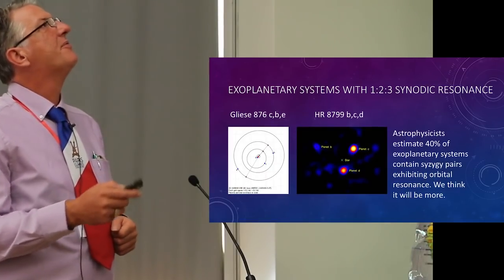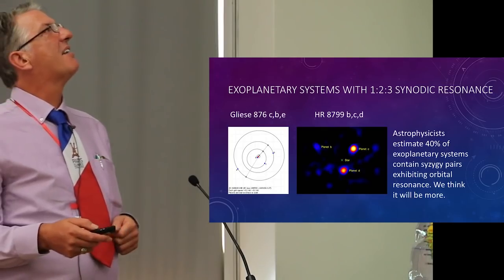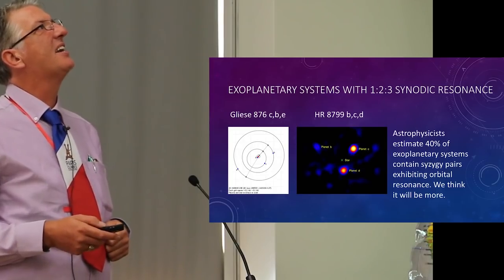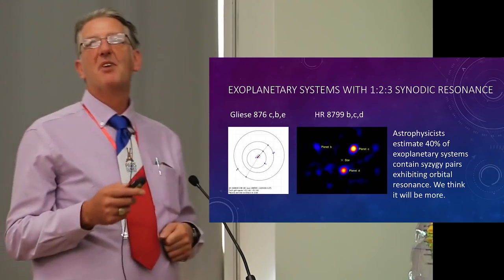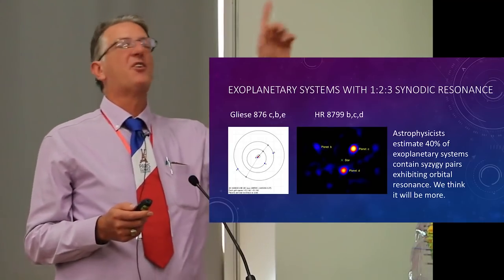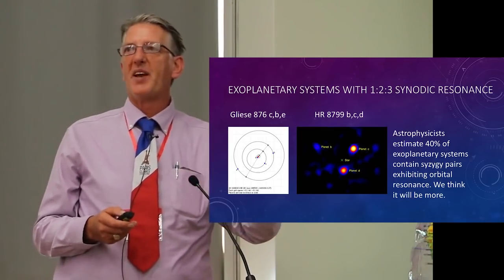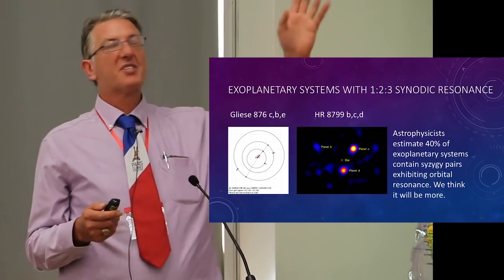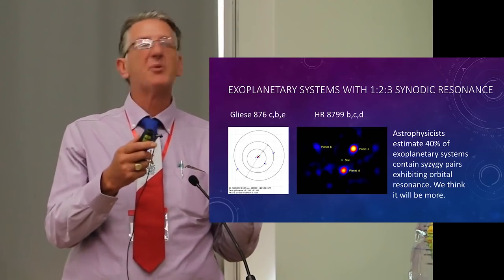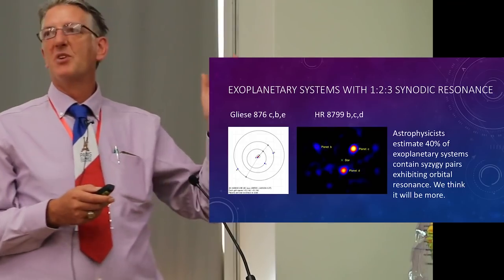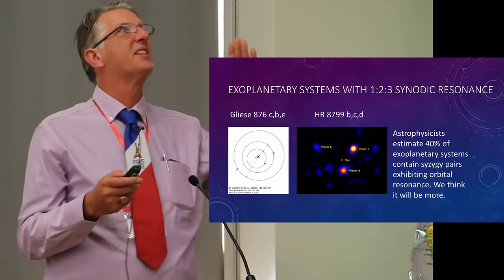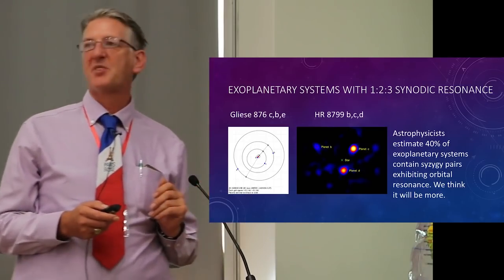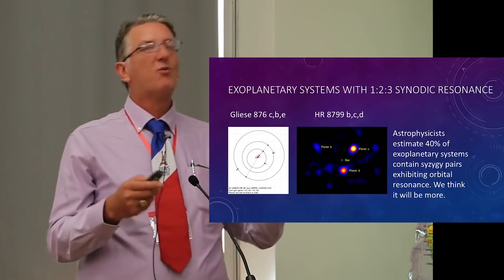So another couple of three to two to ones: Gliese 876, HR 8799 BCD, they exhibit the same thing. And in fact other people have now gone through the catalogue looking at orbital period relationships, and they now estimate 40% of exoplanetary systems contain pairs where you have relationships between these orbital periods. So we think that once they catch on to the idea that it's actually between the conjunction periods that they should be looking, it's going to turn out there'll be a lot more than 40% of exoplanetary systems where we see resonance being exhibited.